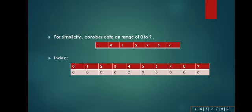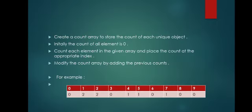For simplicity, consider data of range 0 to 9 as shown below. Index. Create a count array to store the count of each unique object. Initially the count of all elements is 0.